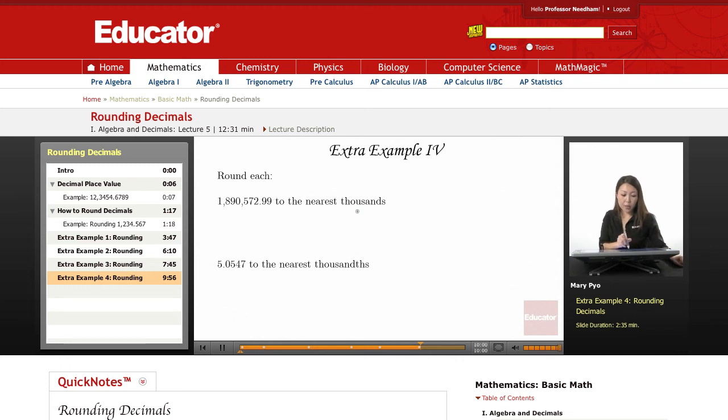Okay, this number to the nearest thousands. That means the thousands is the number right before the first comma, right? So right in front of the first comma is the thousands.